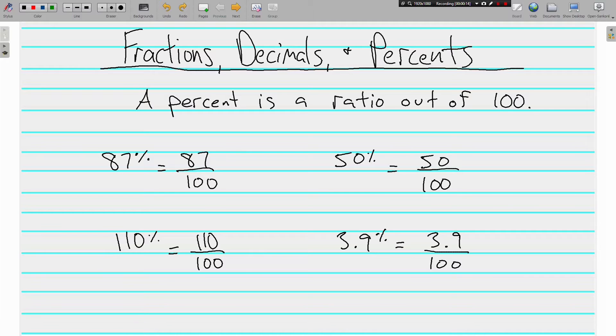Percents are just ratios out of 100. Percent - it's a ratio or a fraction out of 100. So when you see 87%, that means the same thing as 87 out of 100. 50%, 50 out of 100.